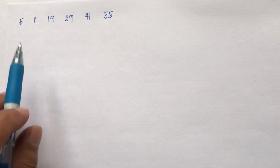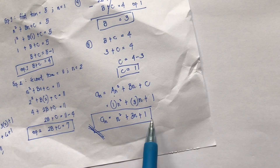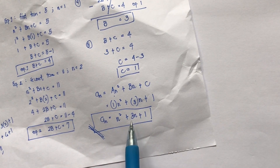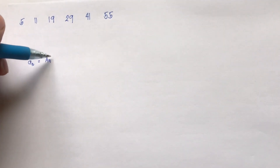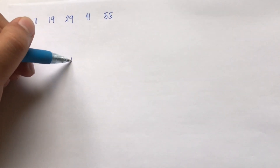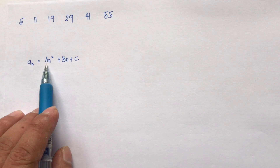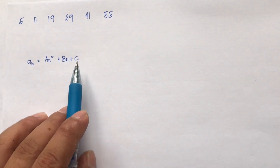Let's find the general term of the sequence 5, 11, 19, 29, 41, 55 using the shortcut method, and see if we still arrive at the same answer: n squared plus 3n plus 1. The shortcut method requires three formulas to find a, b, and c, with the reference still being the general term of a quadratic: a(n) = an squared plus bn plus c.